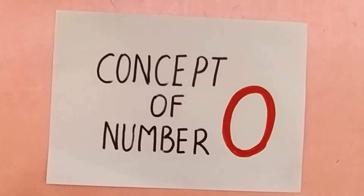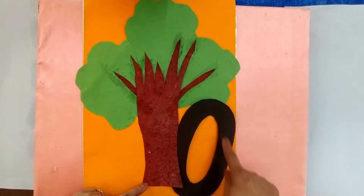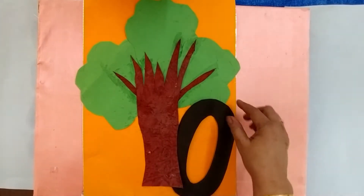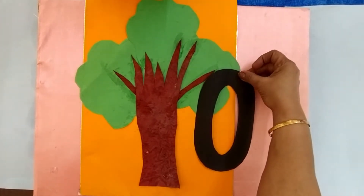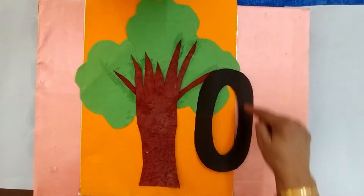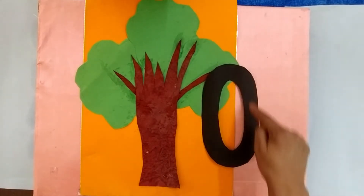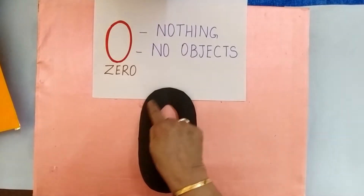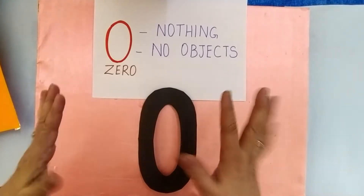Hello kids, welcome back to our number class. Today I will tell you about the concept of zero. Hey kids, look — something is hiding behind the tree! Oh, this is number zero, it is hiding behind the tree. Look at this, this is number zero. Number zero looks like this — it means nothing, no objects.